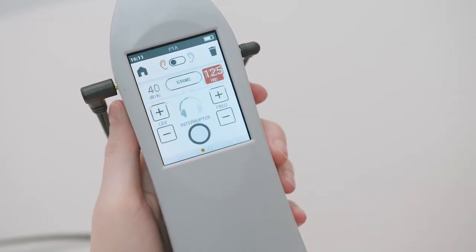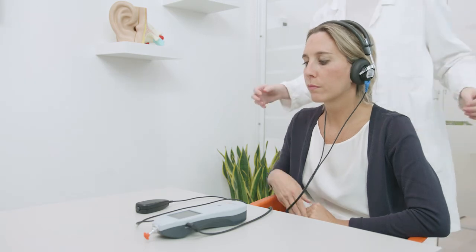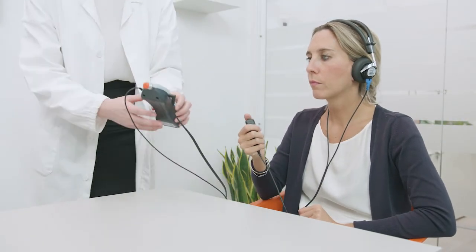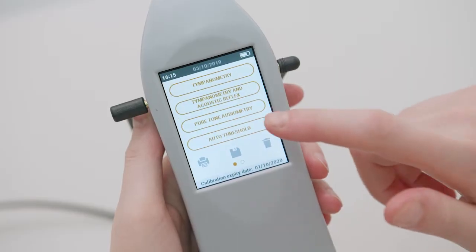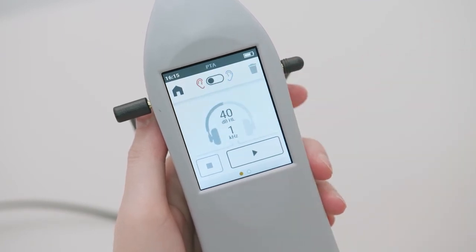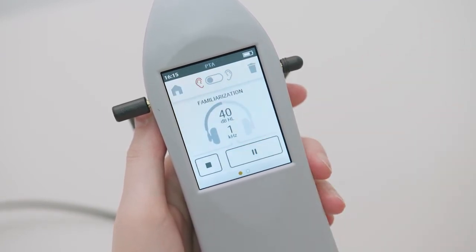Auto thresholds tonal audiometry allows you to set your hearing threshold for several frequencies through an automatic procedure. The exam is selectable from the main menu and can be started by simply pressing the play button.